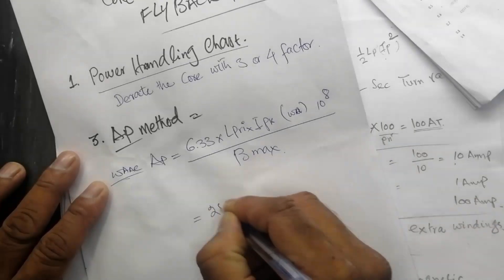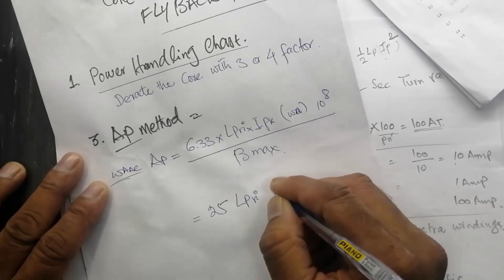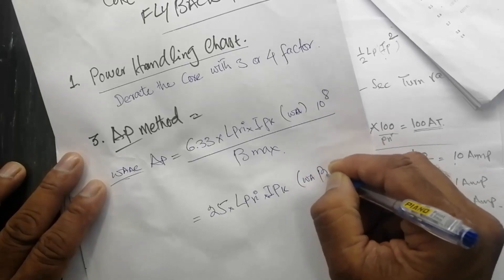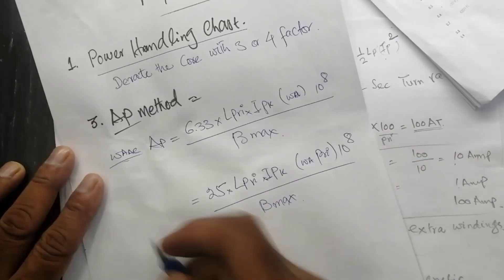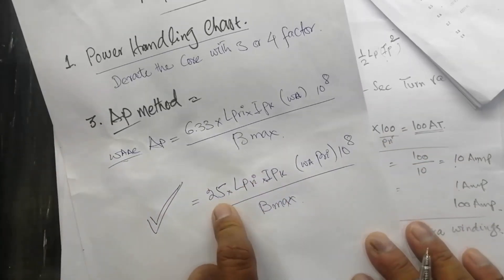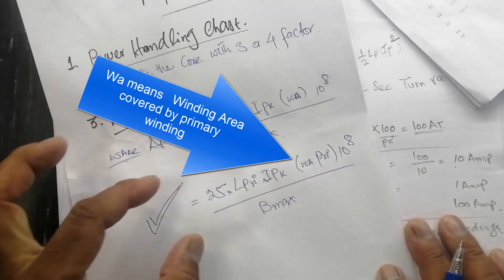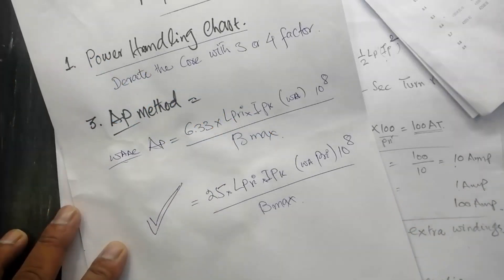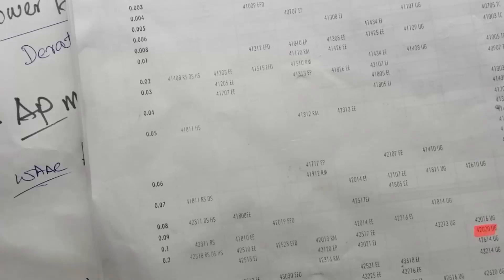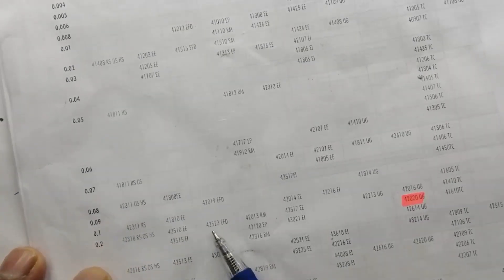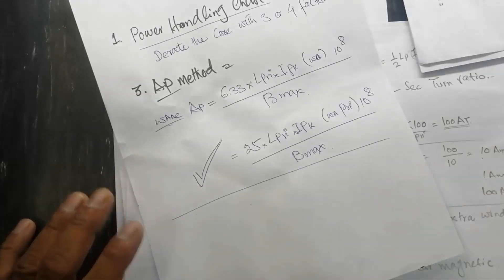For both primary and secondary windings combined, the best formula is: AP = 25 times L-primary times I-peak (primary peak current), divided by winding area, multiplied by 10 to the power of 8, divided by B-max. Once you calculate the AP result, come to the AP chart. For example, if your value is 0.2, you can select EE cores, PQ cores, EFD, or RM cores from the chart.